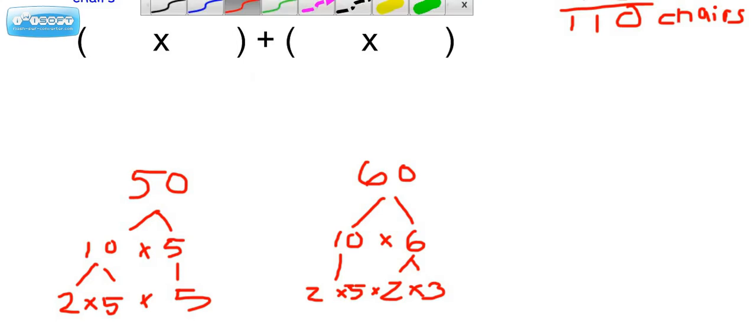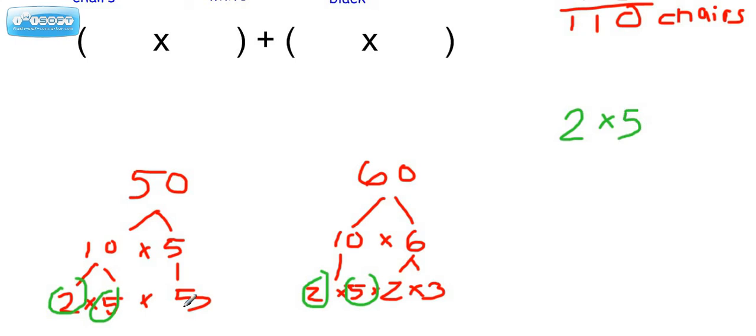Let's just look for our matches. We have matching 2's, so I'm going to write that down over here. We have matching 5's, so let's write that down over here. And that's it, that matches in both prime factorizations. So we're going to find the product, which is 10, and that's going to be the GCF of 50 and 60. So that's the number we're going to put right here.